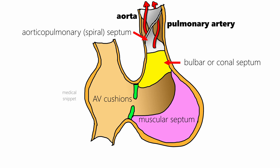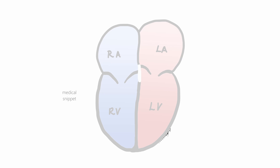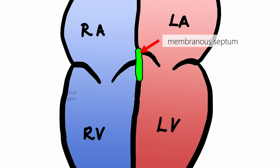After the formation of the bulbar septum, the interventricular foramen shrinks. The remaining gap is filled by proliferation of tissues of the atrioventricular cushions, and this part of the septum is called the membranous part of the interventricular septum. The anterior part of the membranous septum separates the right and left ventricles, while the posterior part separates the left ventricle from the right atrium.